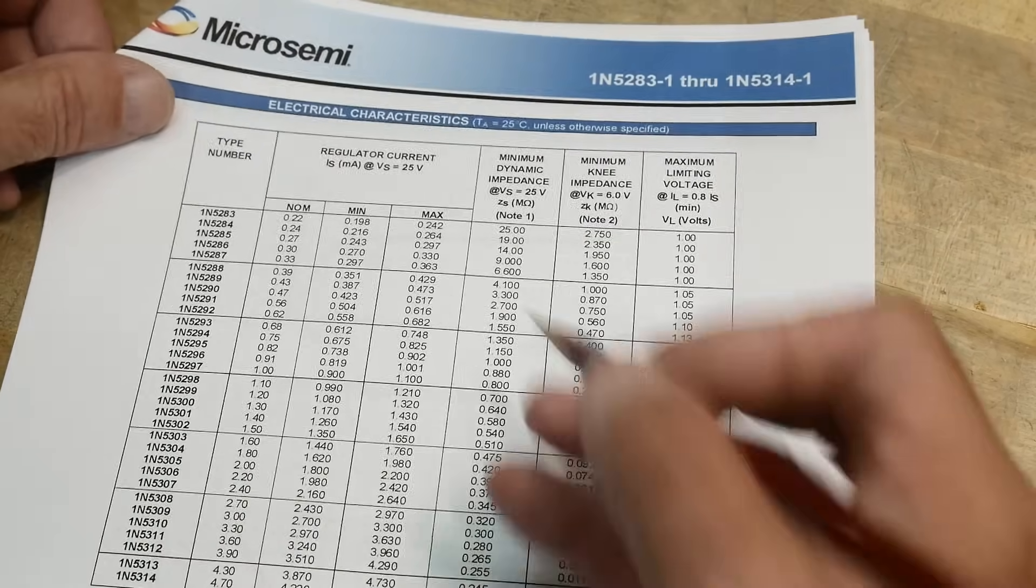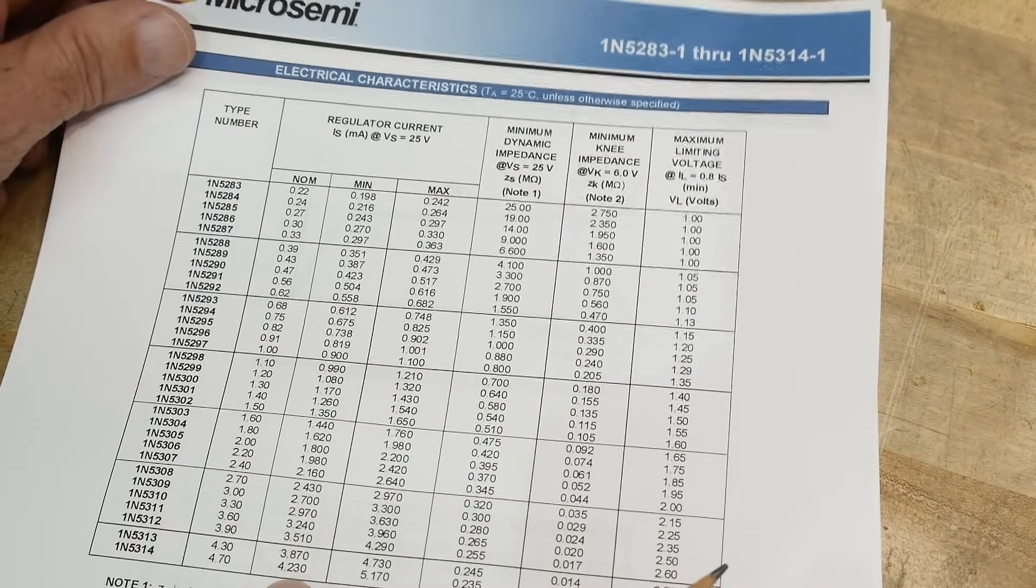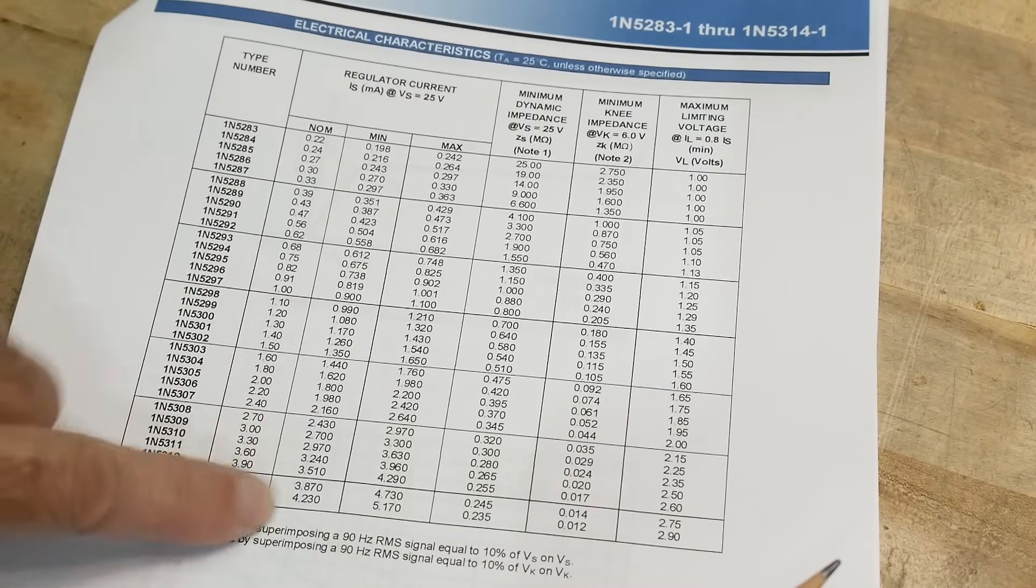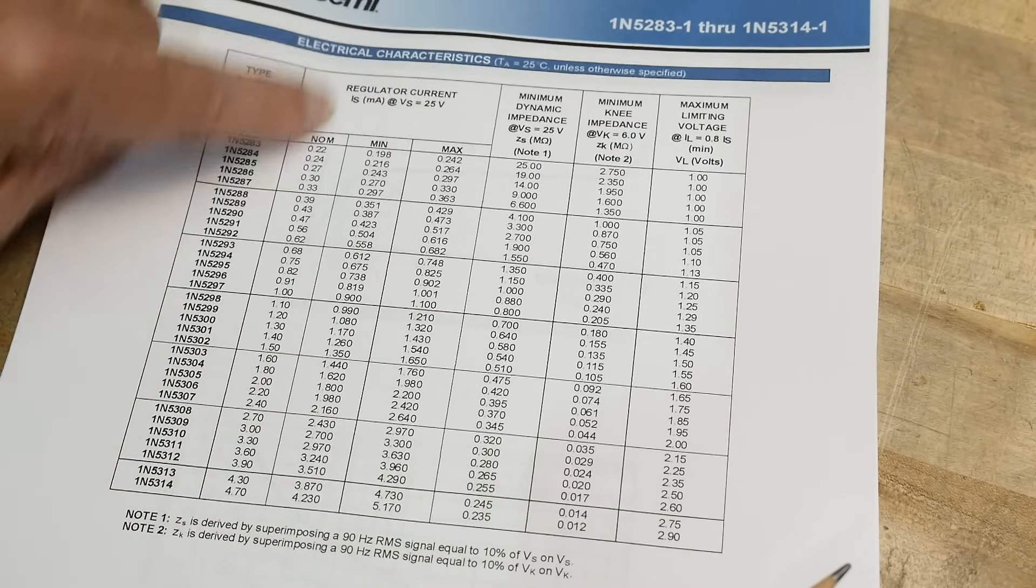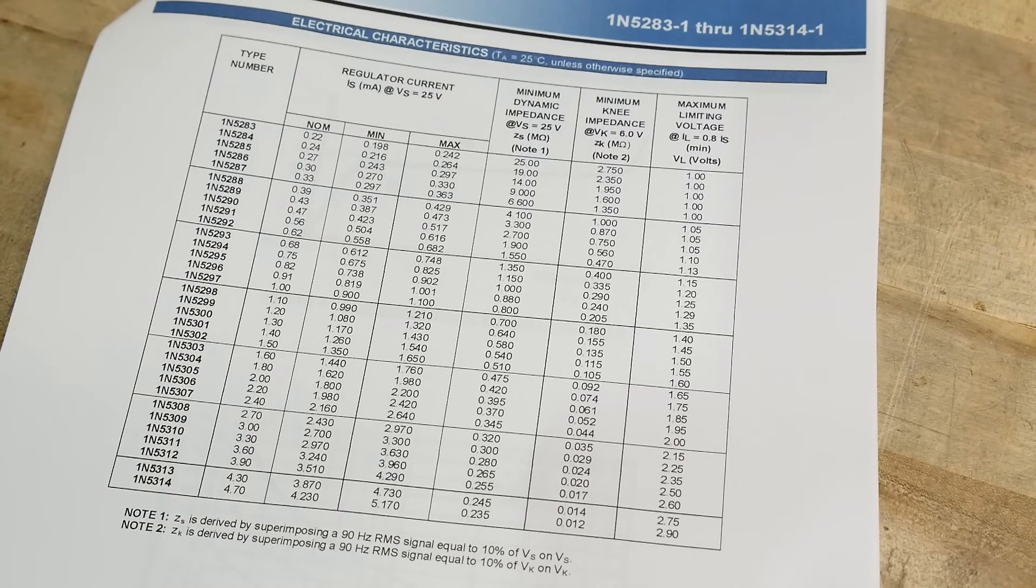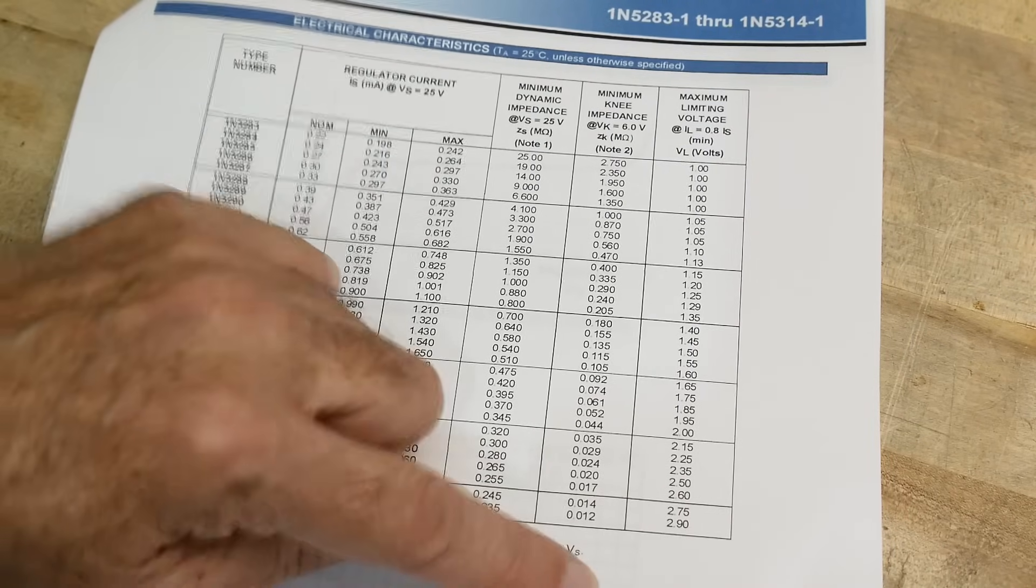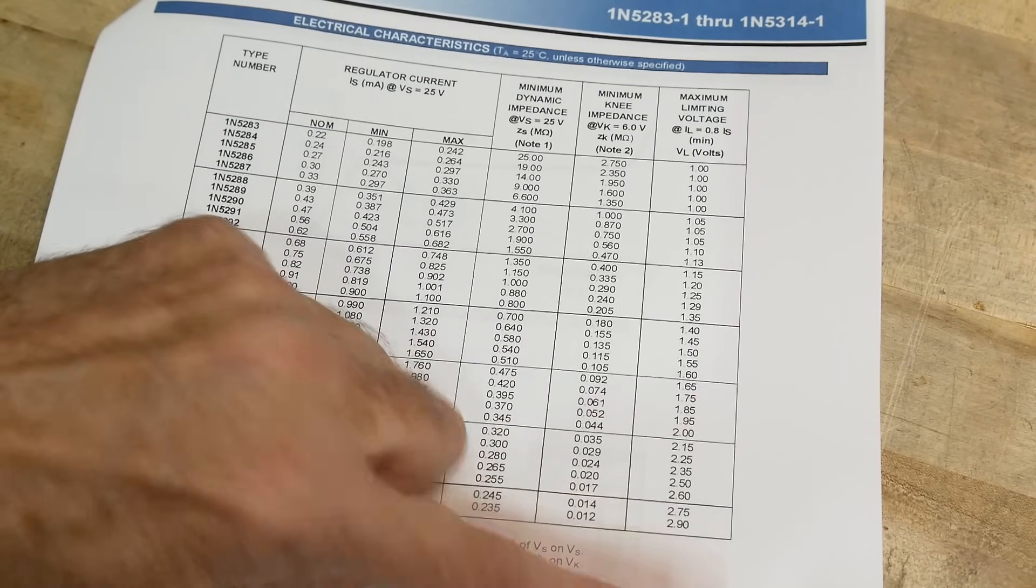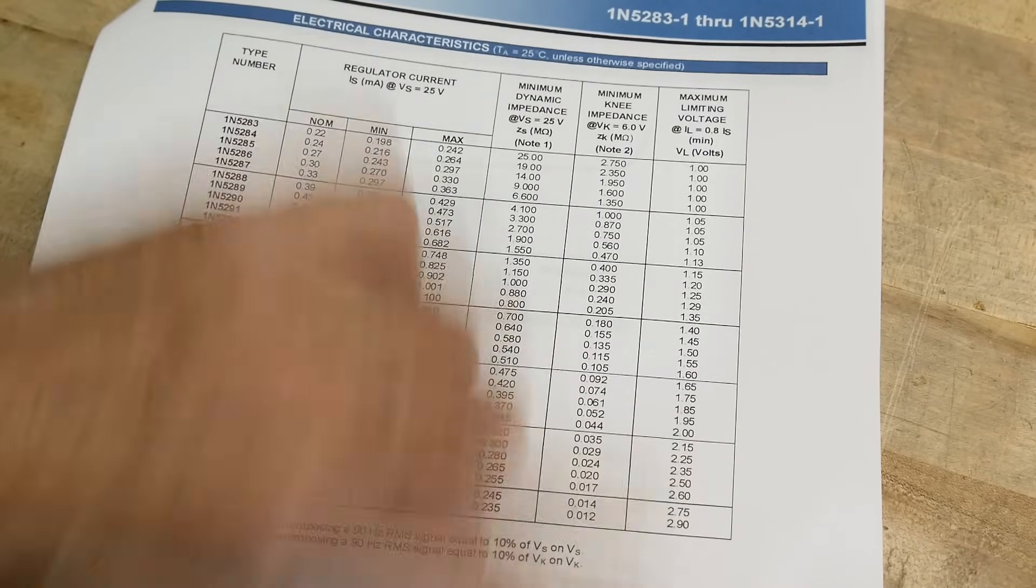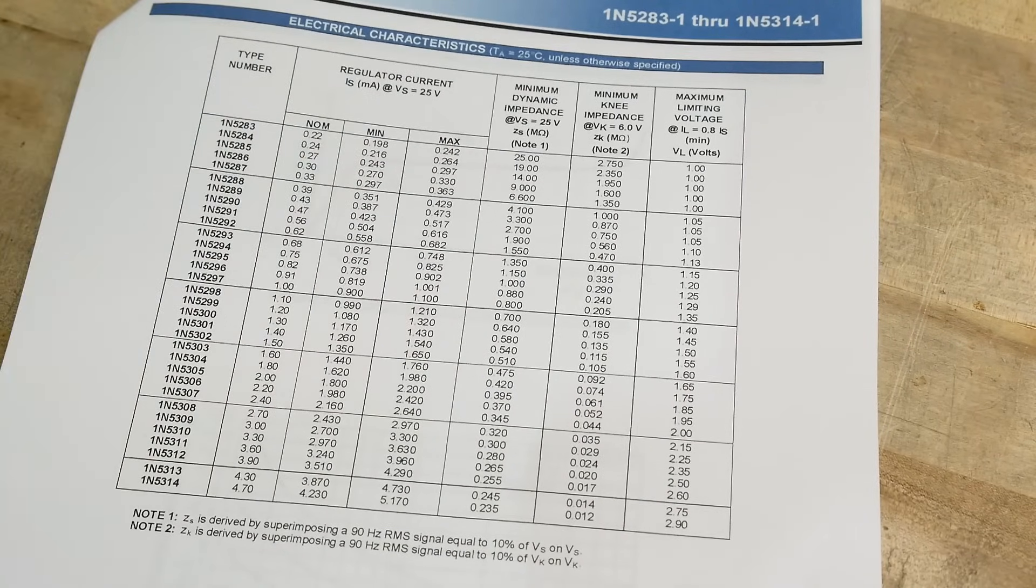You can get them anywhere from 0.2 milliamps up to 4.25 milliamps. That's basically the range you can pick with pretty fine graduations of these currents. If you just had a resistor, then the current through the resistor varies with the voltage, but with this magic diode it doesn't matter what the voltage is - the current will stay the same.